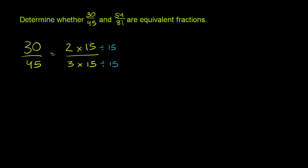Well, this 15 divided by 15, they cancel out. This 15 divided by 15, cancel out. And we'll just be left with 2/3. So 30/45 is the same thing as 2/3. It's equivalent to 2/3.